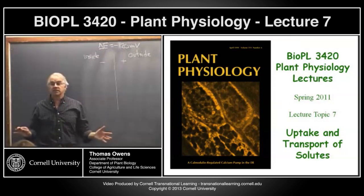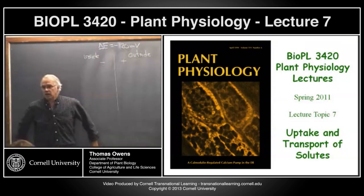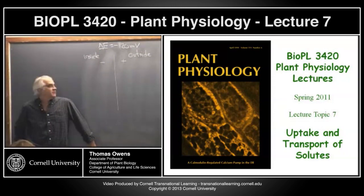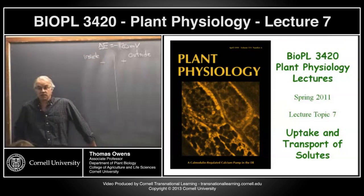All cells — bacteria, yeast, plants, animals — all cells have a negative membrane potential. It's more positive outside, more negative inside. This is true for all cells, not surprising because membrane potential is probably very important for transport processes in all cells, going back to the earliest cells.